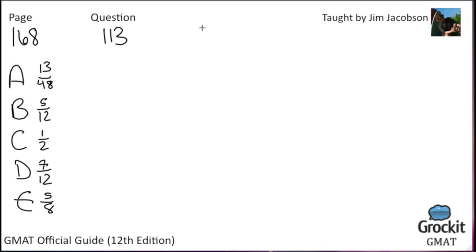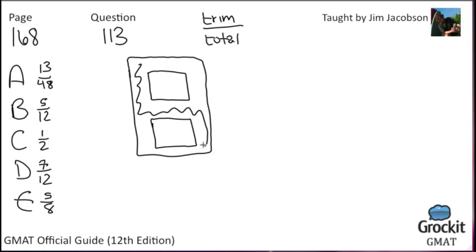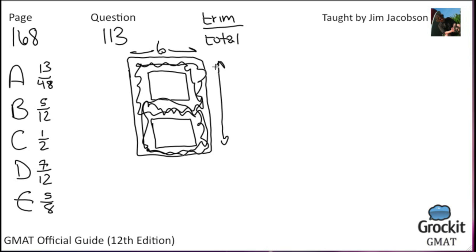The fraction we're looking for is area of trim over total area. The total area is 6 times 8 equals 48. The trim is 1 foot wide all the way around — 1 foot on each side horizontally and vertically. If the full height is 8, subtracting the top and bottom 1-foot trim strips, the interior height is 8 minus 3 equals... actually each unshaded rectangle is 2.5 tall. The full width is 6, subtracting the two 1-foot trim sides gives 4 across.